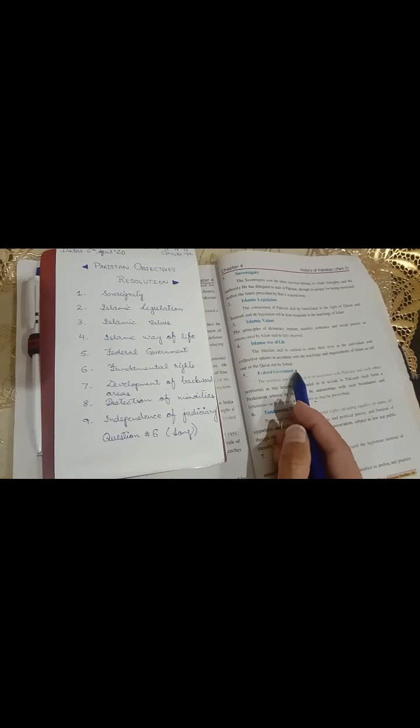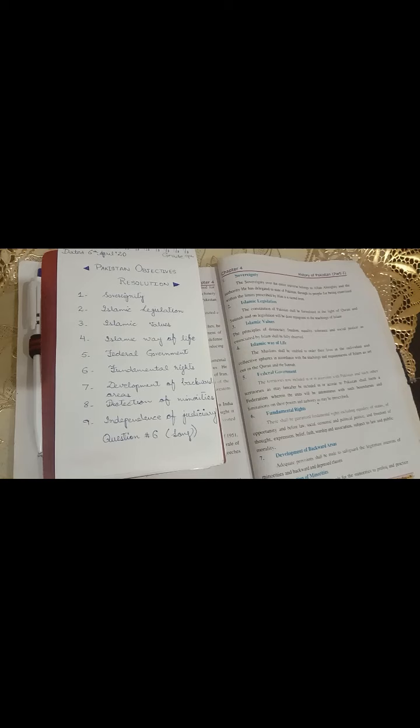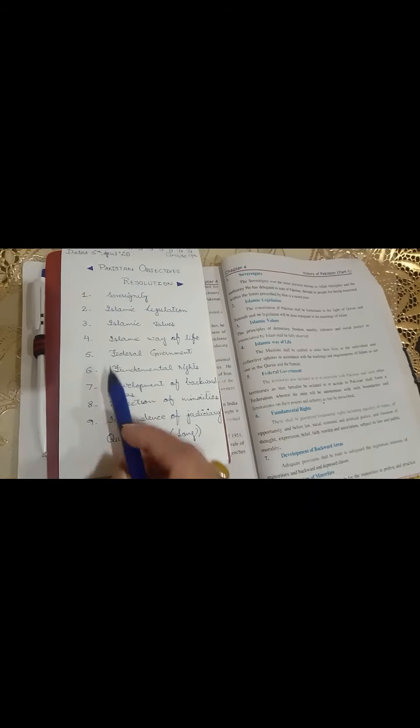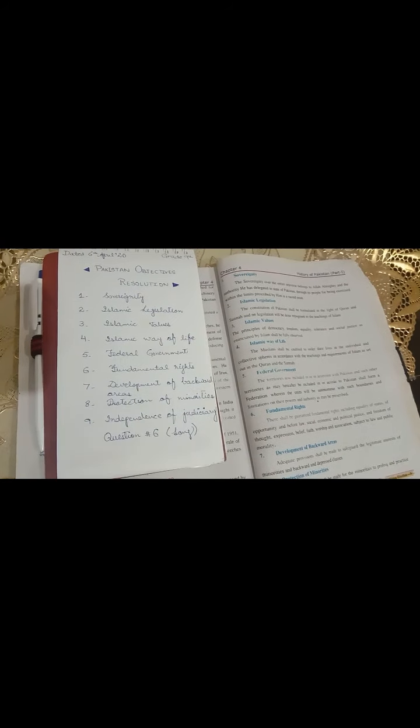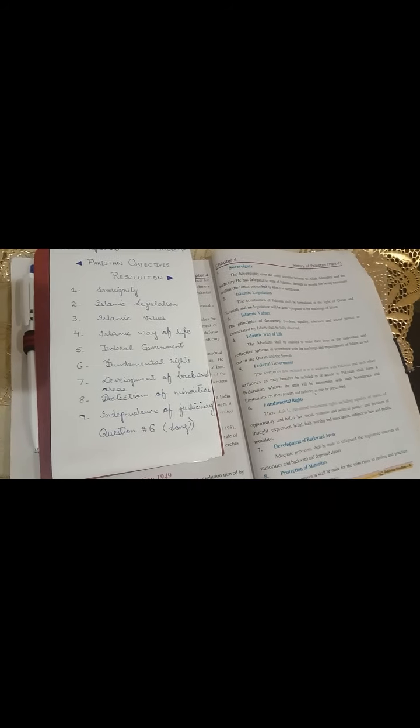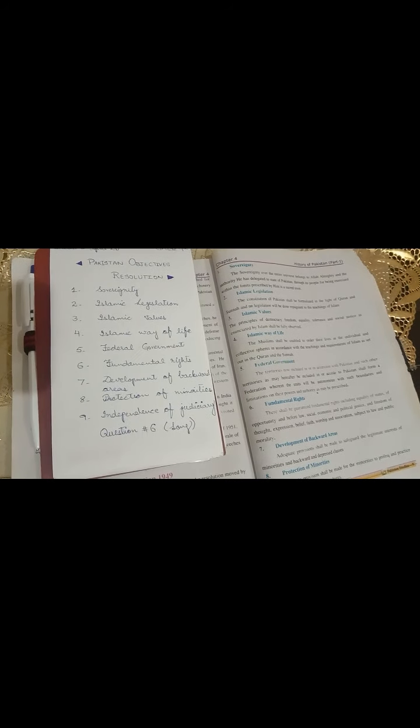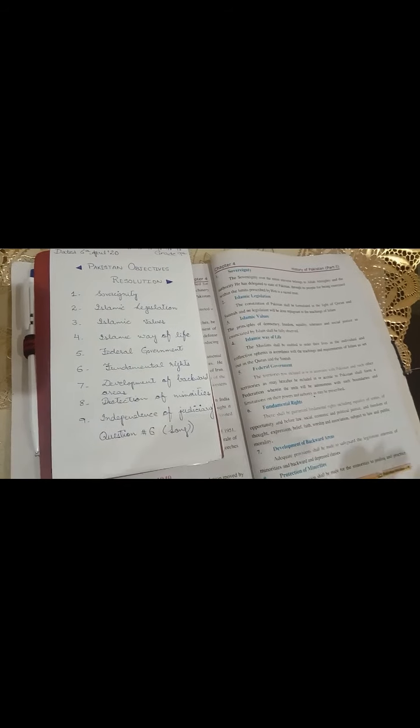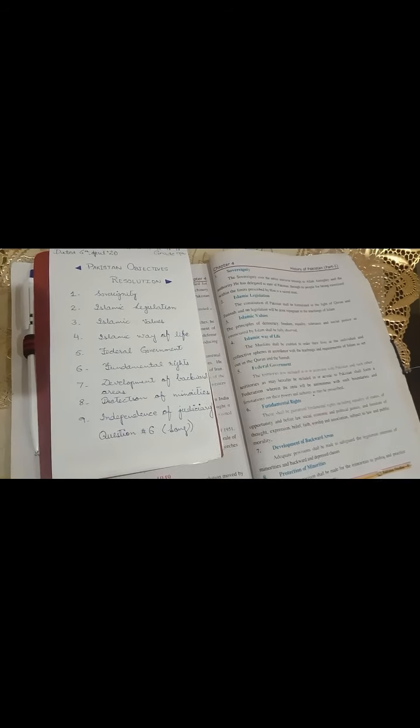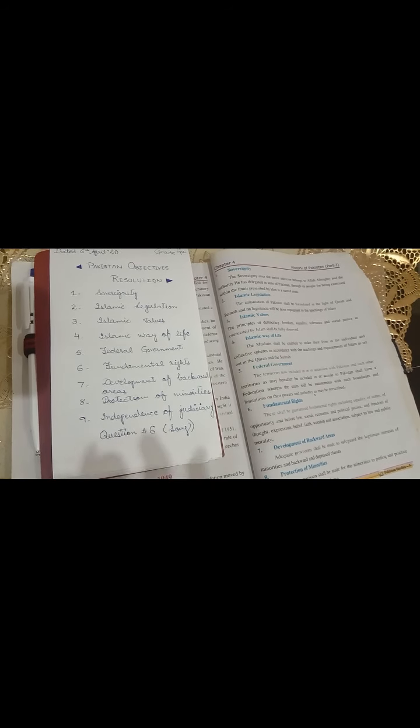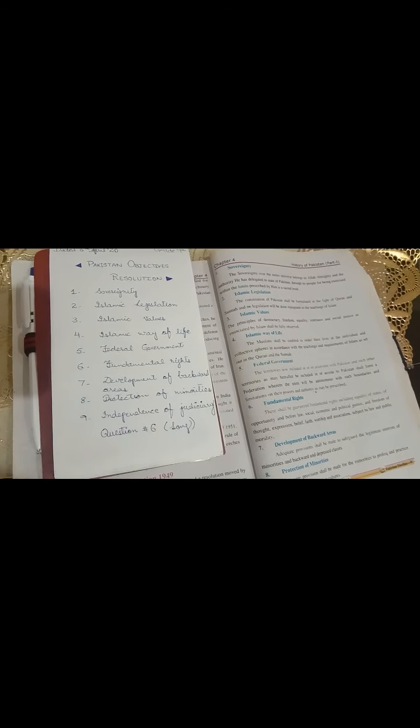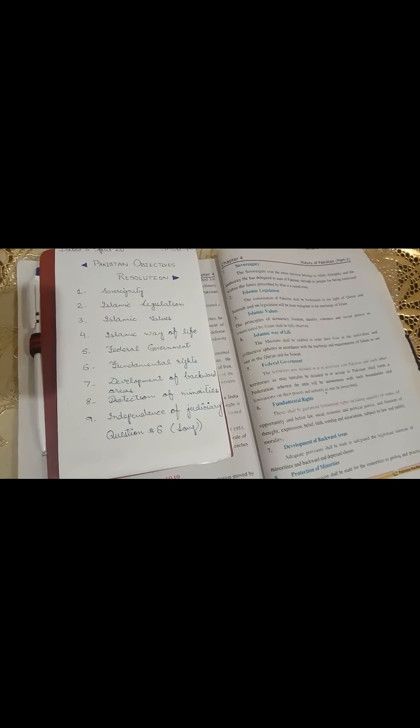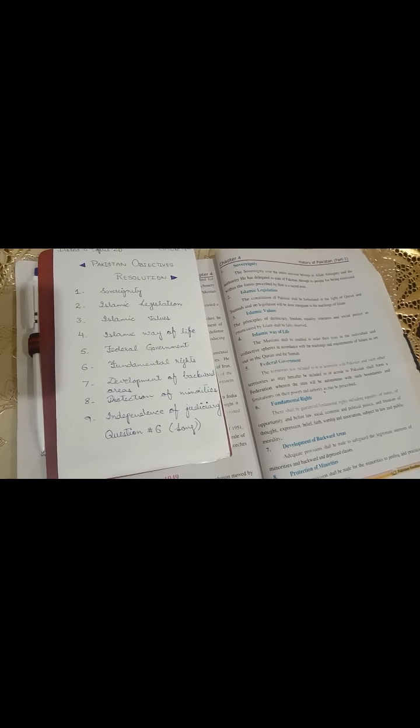Quran اور Sunnah جو ہے ہماری ان کے اصولوں پہ چلتے ہوئے. Fifth point is federal government which means that جو constitution کے according جو ہم government بنائیں گے اس میں ہم federation system رکھیں گے جس میں different units ہوں گے like judiciary ایک unit ہو گیا, legislation کا ایک unit ہو گیا اور اس طرح سے ہوں گے. اور وہ آپس میں اکٹھے کام کریں گے لیکن ہر ایک کو limited جو ہے authority دی جائے گی.